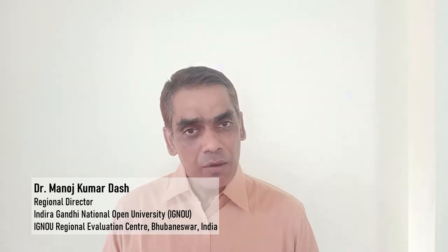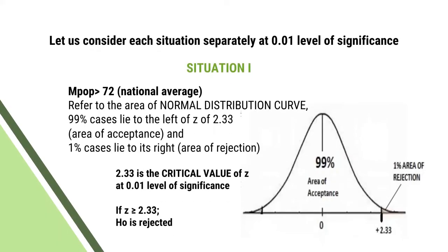Now let us consider each situation at 0.01 level of significance. Consider situation 1: population mean is greater than 72, that is greater than the national average. Refer to the normal distribution curve: 99% of cases lie to the left of Z equals 2.33. Here, 2.33 is the critical value at 0.01 level as it is a one-tailed test — this is the area of acceptance. And 1% of cases lie to its right — that is the area of rejection. If Z is greater than or equal to 2.33, the null hypothesis is rejected.